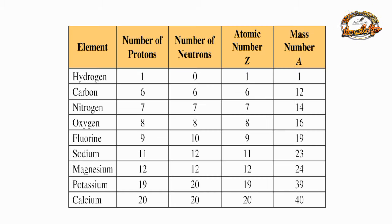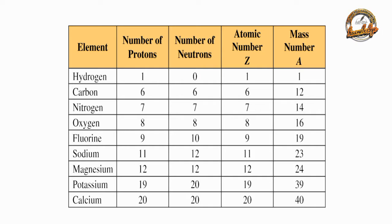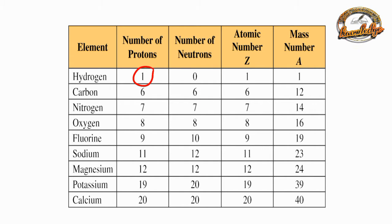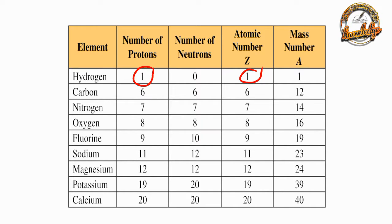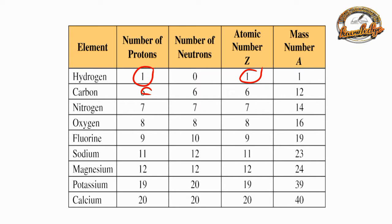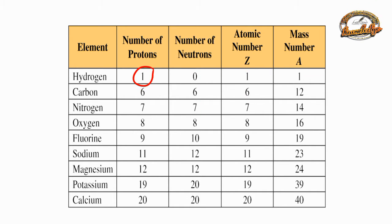For example, hydrogen: its nucleus contains one proton, so the atomic number of hydrogen is 1. For carbon, the number of protons is 6, so the atomic number of carbon is 6.